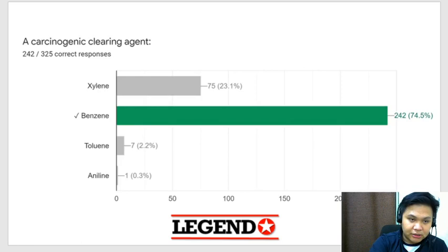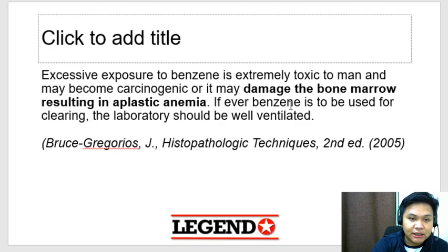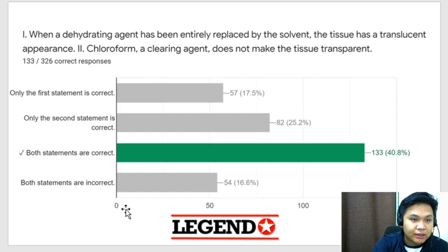The carcinogenic clearing agent is benzene. We have mentioned this — benzene can damage the bone marrow resulting in aplastic anemia.